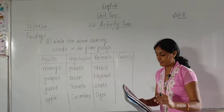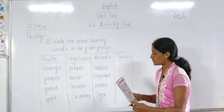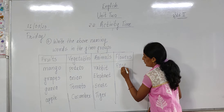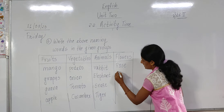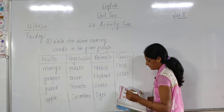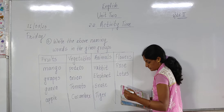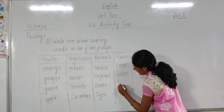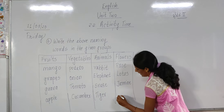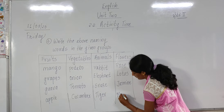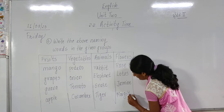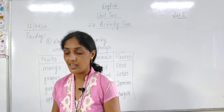Now for flowers, there are five flowers. Rose — R-O-S-E. Lotus — L-O-T-U-S. Another flower is jasmine — J-A-S-M-I-N-E. And the last one is marigold. Now we have written all the groups.